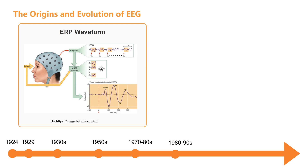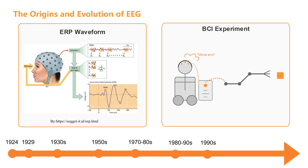During the same period, by interpreting brain electrical signals, scientists developed systems that allow people to directly control external devices with their thoughts. By the end of the 20th century, EEG-based systems could help paralyzed patients control computers or mechanical devices through thought. This technology not only brought hope to rehabilitation medicine, but also moved us one step closer to scenes from science fiction movies.